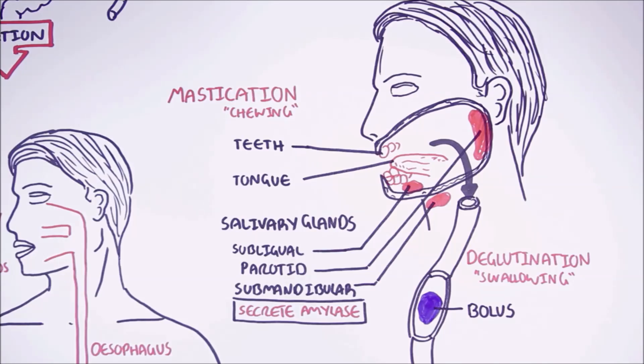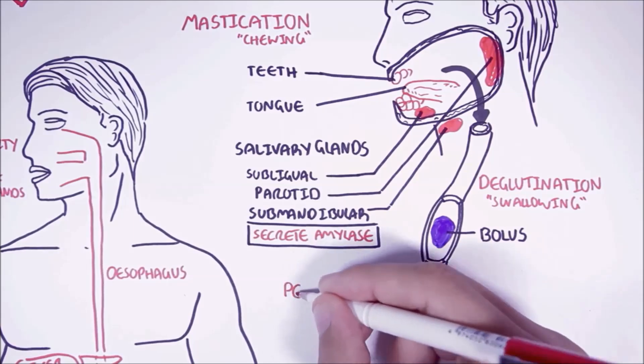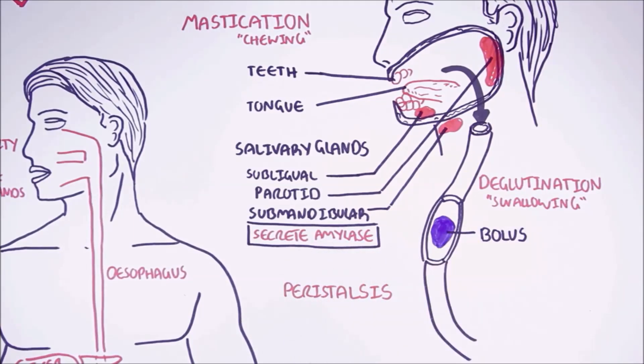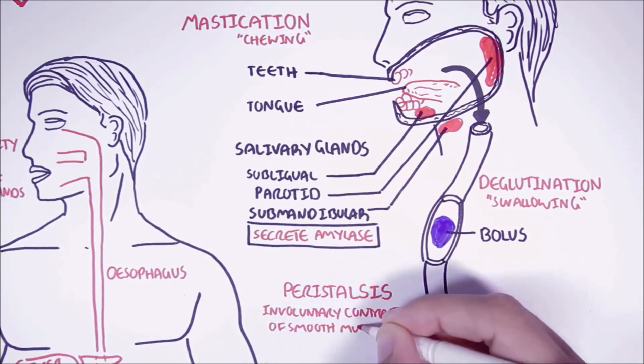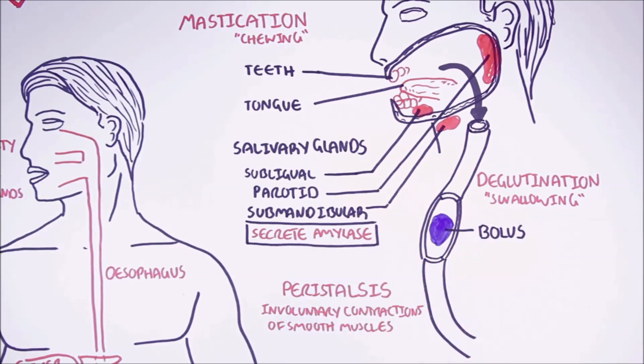The bolus will travel through the esophagus thanks to peristalsis. Peristalsis is the involuntary contraction of the smooth muscles that line the digestive tract. Peristalsis allows the movement of food through the digestive tract.